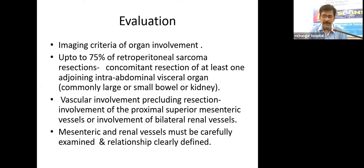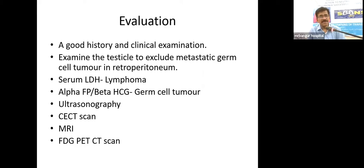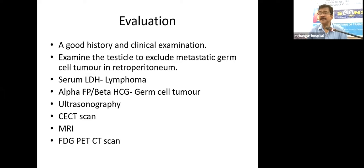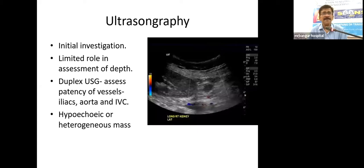A good clinical history and examination is key. We need to examine the testes to exclude metastatic germ cell tumor. Serum LDH elevation suggests lymphoma; elevated alpha-fetoprotein or beta-HCG suggests retroperitoneal germ cell tumors. Imaging investigations include ultrasonography, CT scan, MRI, and FDG PET scan. Ultrasound is the initial investigation, an extension of clinical examination, and can pick up abdominal masses with Doppler assessment of vascularity.